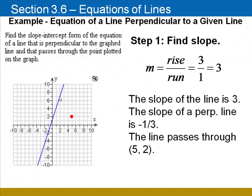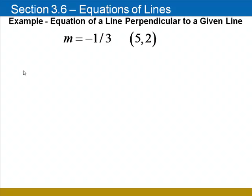If the slope of this line is 3, the slope of a perpendicular line will be negative 1/3, the opposite reciprocal of the slope we had. Also notice that the point that's given on the graph is at (5, 2). Now we'll find the equation of a line whose slope is negative 1/3 and passes through (5, 2).